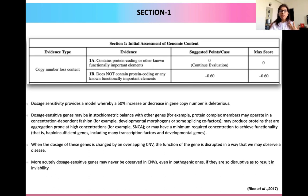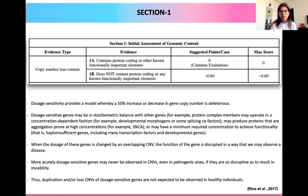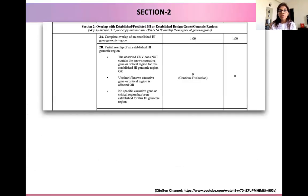Ideally, more accurately dosage-sensitive genes may never be observed in CNVs, even pathogenic ones — if they are so disruptive, they are likely to result in inviability. So ideally, duplication or loss CNVs are not expected to be observed in healthy individuals. If we are observing it in our individual, it may be an indication that they might lead to a disease. Now that we've understood the concept of dosage sensitivity, we go to section two.